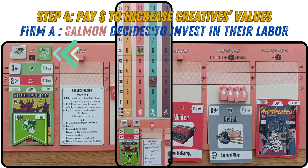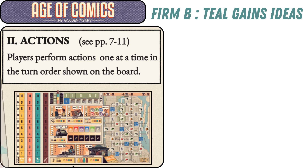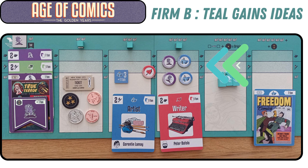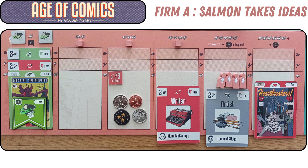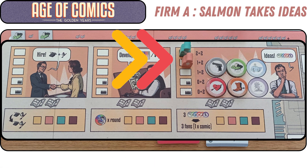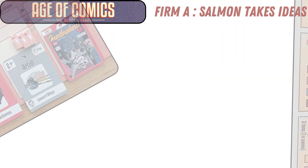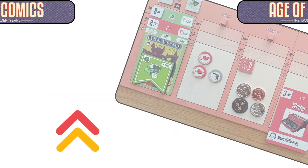Firm A — Salmon — decides to invest in their labor and pays three dollars to increase the value of their sci-fi writer. As a result, the value of their printed comic book increases to five, meeting the sales order condition to gain three fans along the fan track. Phase two — actions. Firm B — Teal — gains ideas by placing their editor on the action, collecting two idea tokens from the board and two idea tokens of their choice — two horror, two superhero, and one romance idea token. Firm A — Salmon — also takes ideas and collects two romance idea tokens and one crime idea token. Keep in mind that taking idea tokens can signal to your competitor which genre of comic you plan to print.